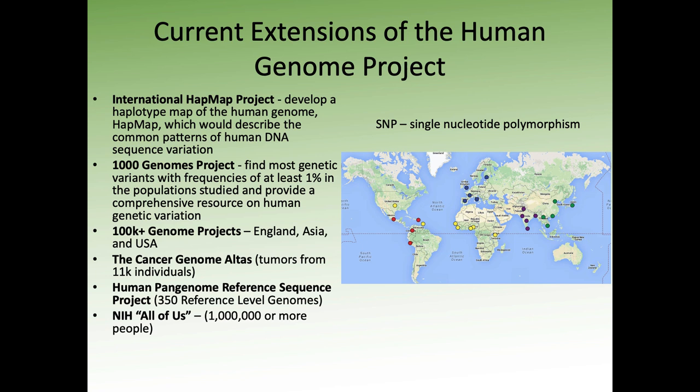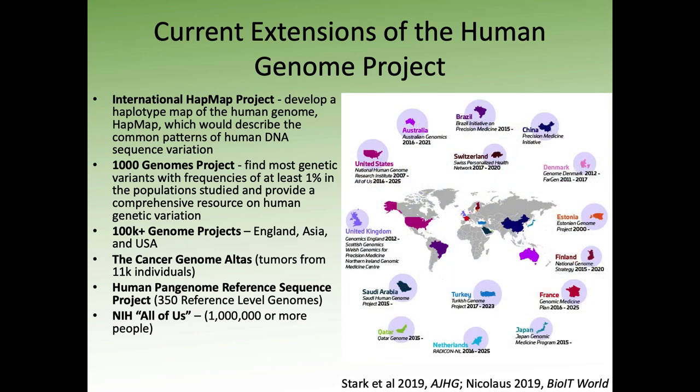More recent initiatives include the 100,000-plus genome projects for England, Asia, and the US; the Cancer Genomics Atlas; the Human Pan-Genome Reference Sequence Project right at UCSC; and the NIH All of Us project, which aims to sequence over a million people's genomes. If you look across the world, there are tons of genome sequencing projects in many countries and organizations.